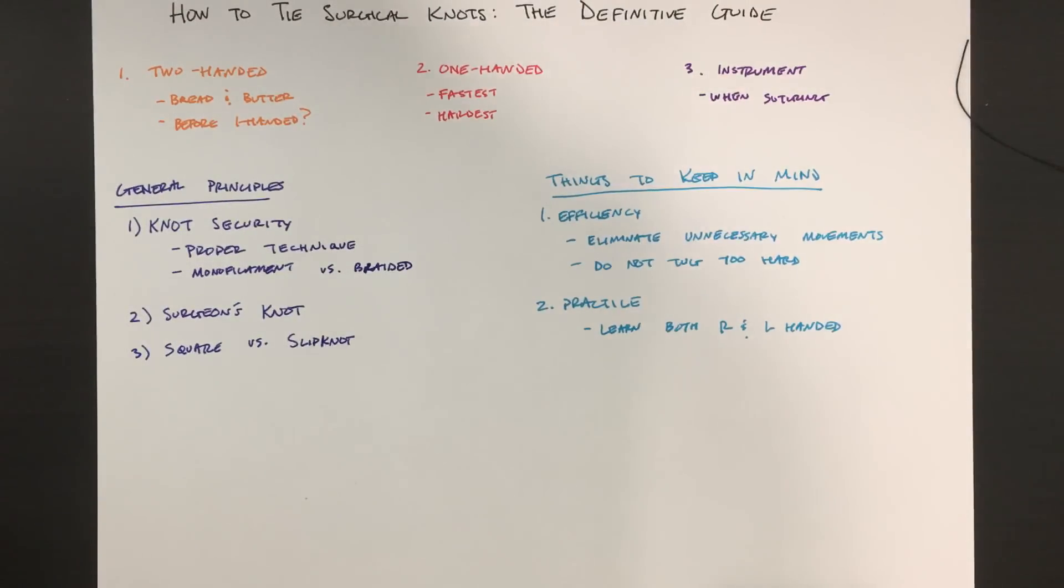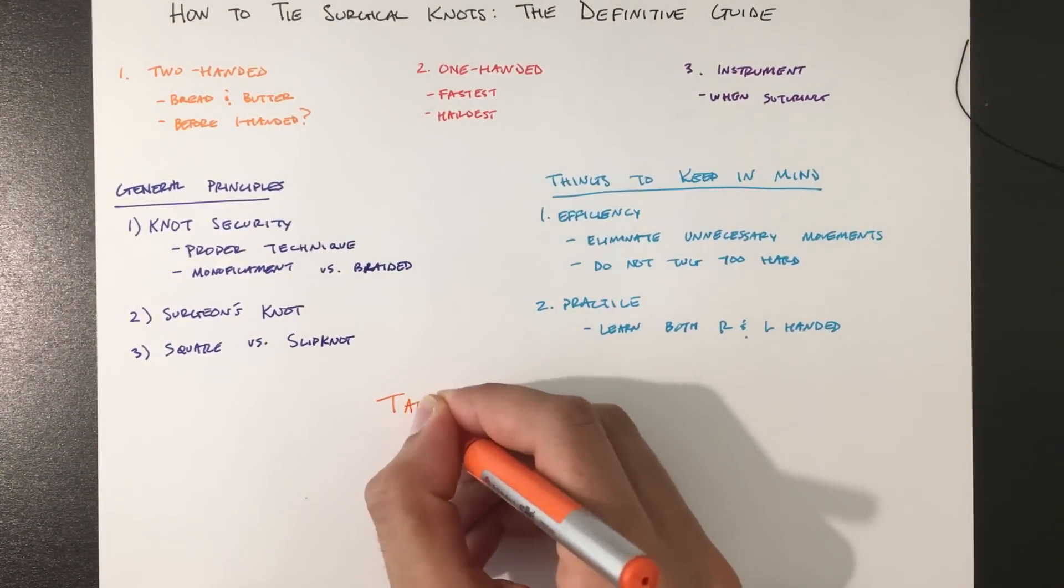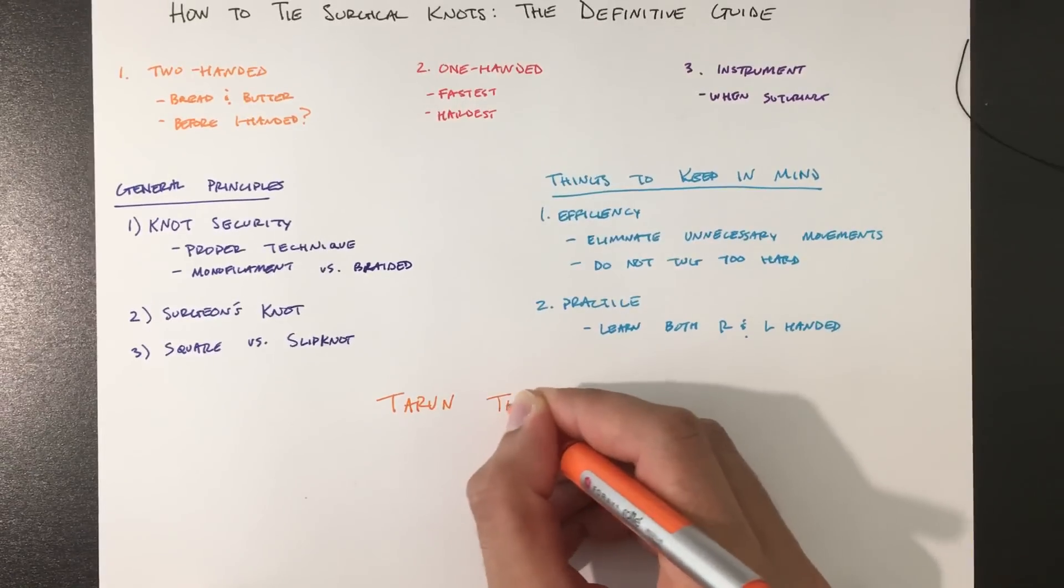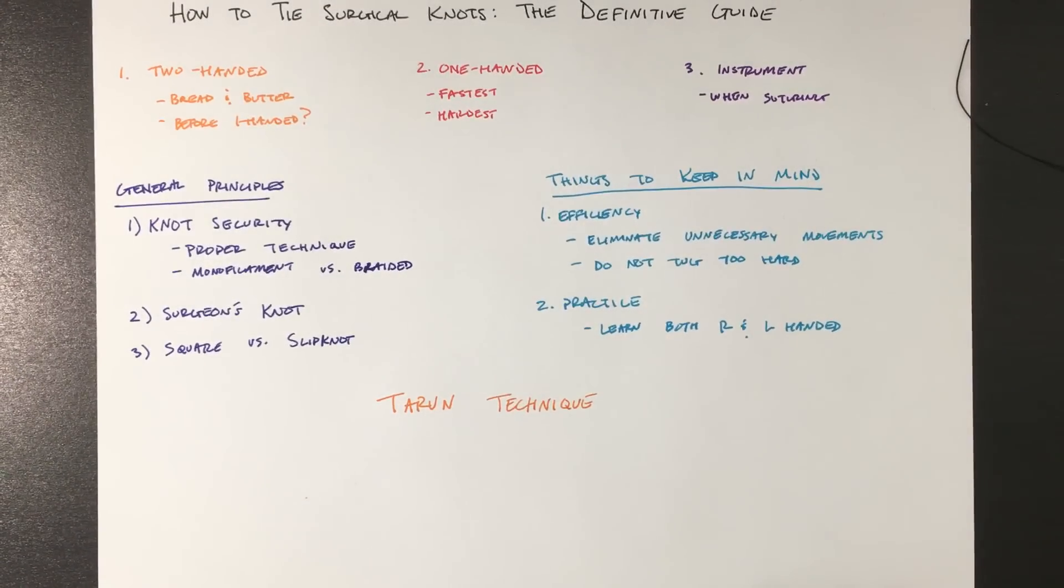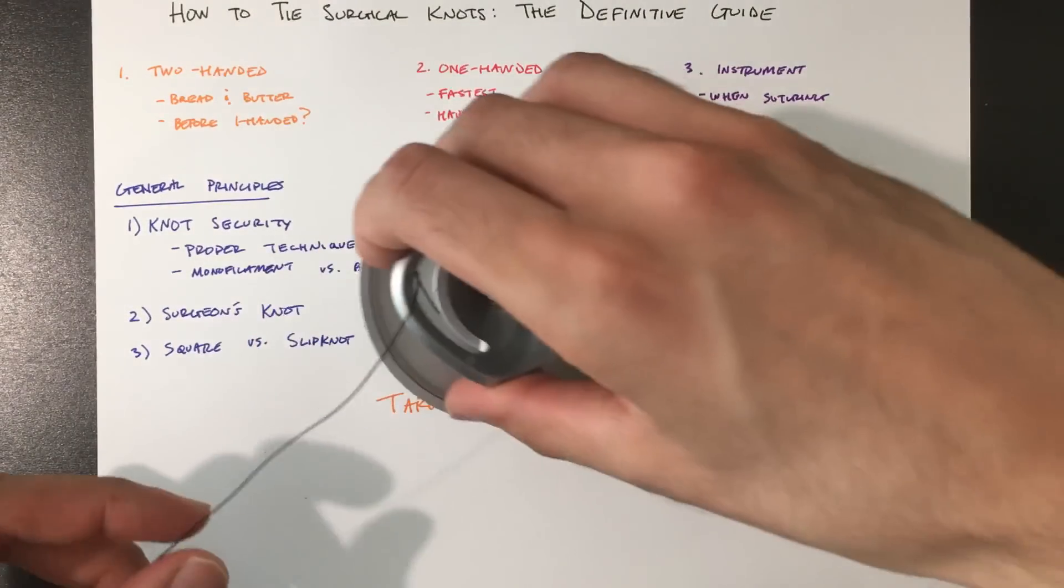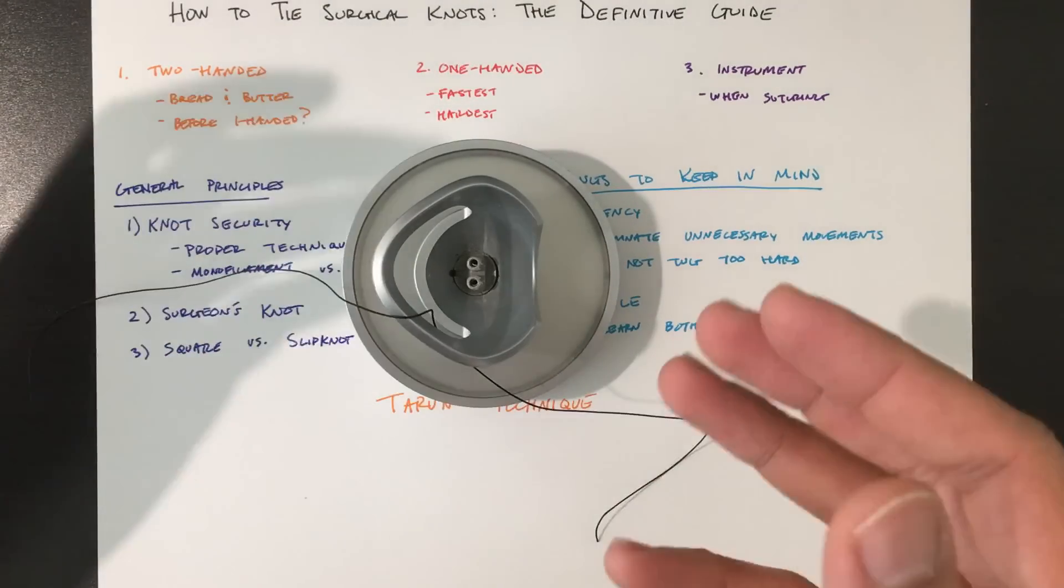Alright guys, so the last technique I'm going to show you is this cool trick. It's called the turn technique based on the person who taught this to me. So this will show you how to tie a surgeon's knot using a one-handed tie and you'll do it in one movement.